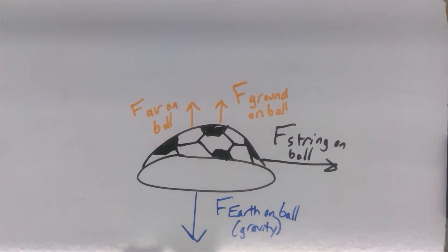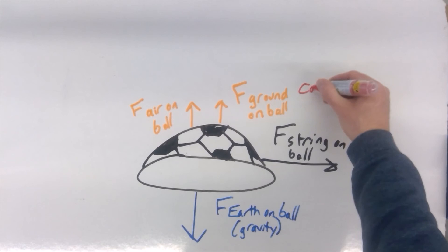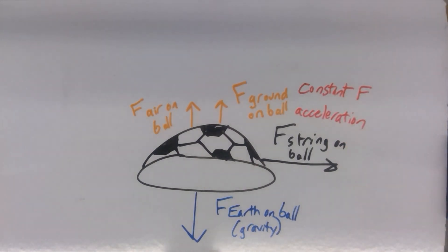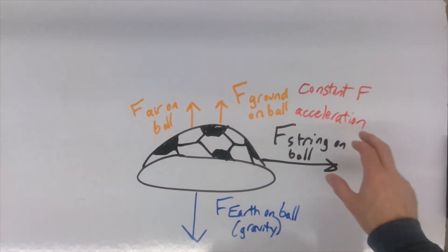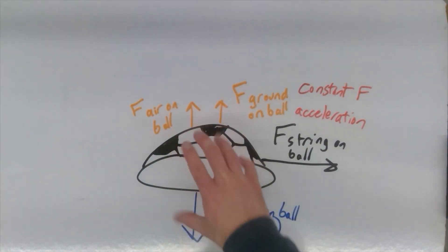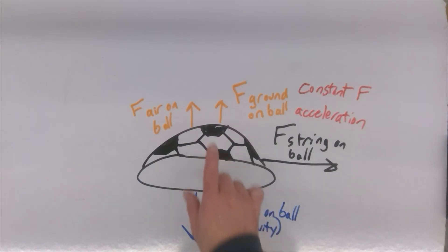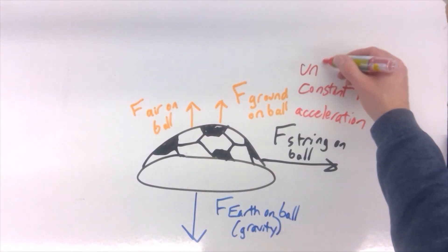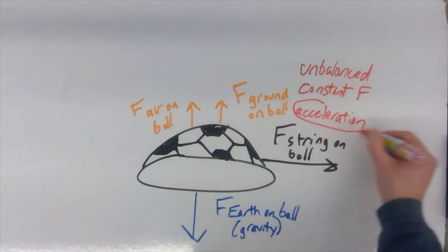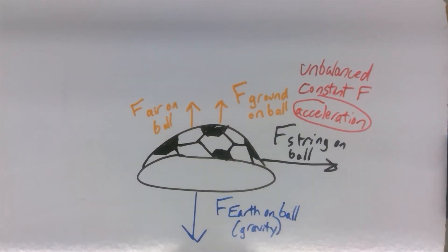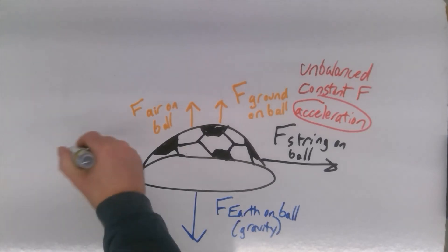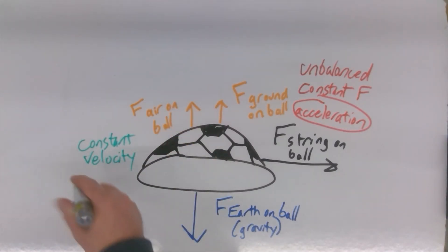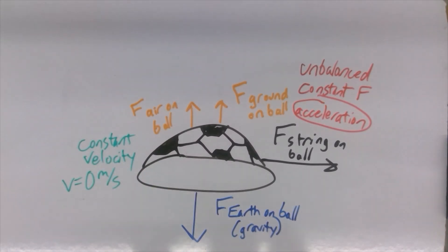In this situation, we're speeding up — we're changing our velocity — so when we have a constant force, we have acceleration. However, a constant force doesn't necessarily mean constant acceleration. The key idea is that we need an unbalanced constant force to lead to acceleration. If the forces are balanced, then we'll have a situation of constant velocity. If we're considering the up and down motion of the hover ball, that velocity is zero meters per second, which is a constant velocity situation.